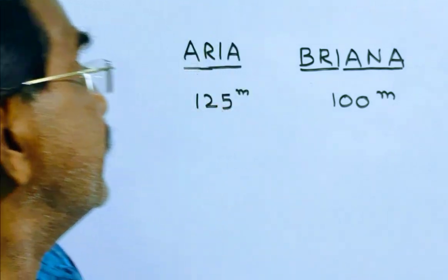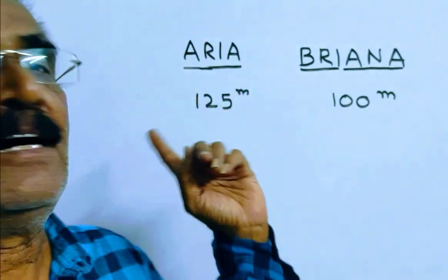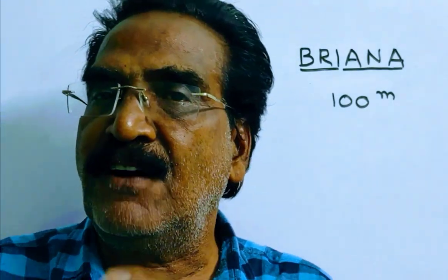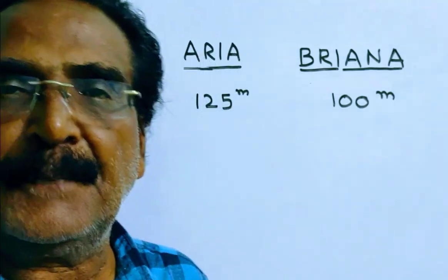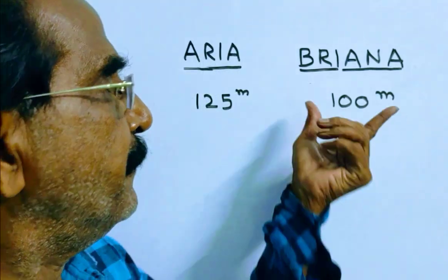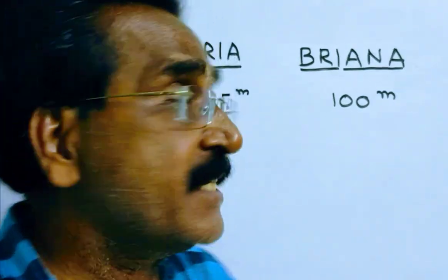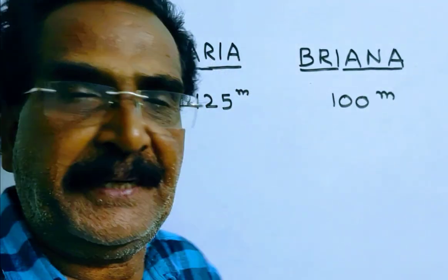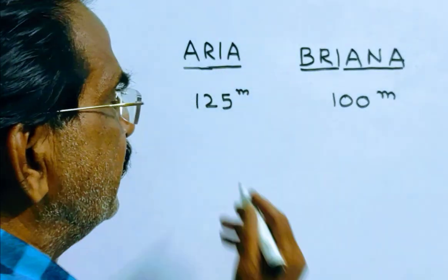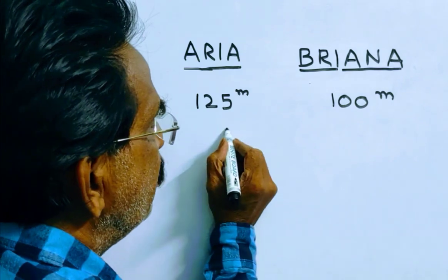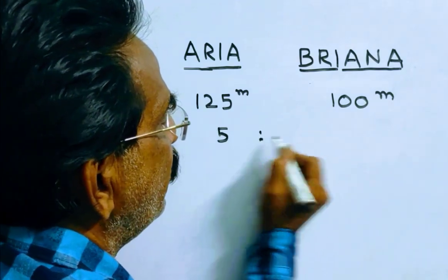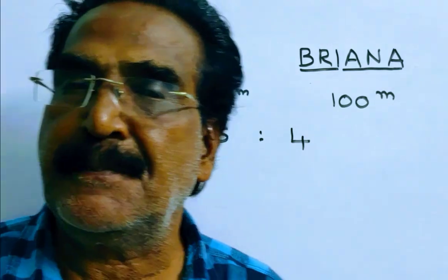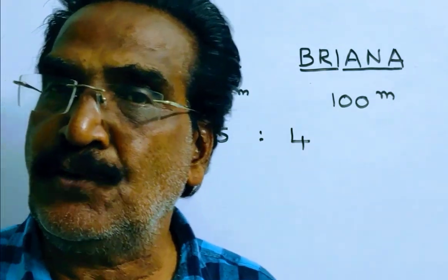Here, Aria is 25% faster than Briana. That means if Briana runs 100 meters, then Aria runs 125 meters. The ratio of their speeds is 125 to 100, which simplifies to 5 is to 4.